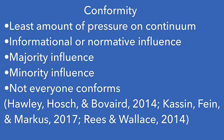People might conform due to informational influence, which is when they're uncertain about something and think that the other person is correct, or because of normative influence, which involves being afraid of the negative social consequences of deviance, like ostracism. There are also factors that determine if a person is more or less likely to conform, but it's important to remember that not everyone conforms.